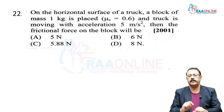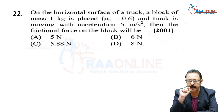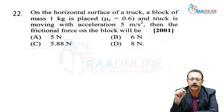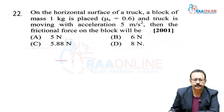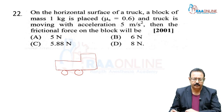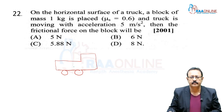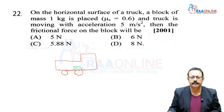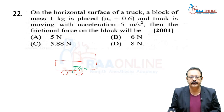Next: On the horizontal surface of a truck, a block of mass 1 kg is placed, and the truck is moving with acceleration 5 m/s². The coefficient of friction between truck and mass is 0.6. The frictional force on the block will be?